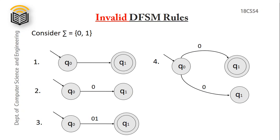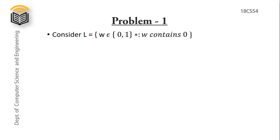Now let's solve some problems on designing a DFSM. Problem 1: consider language L made up of strings W belonging to alphabet set 0 and 1, defined as W contains 0. To design a DFSM, follow a simple approach: first start with the simplest string accepted by the language, then make sure all valid strings are accepted, and finally make sure only valid strings are accepted — it must reject all invalid strings.